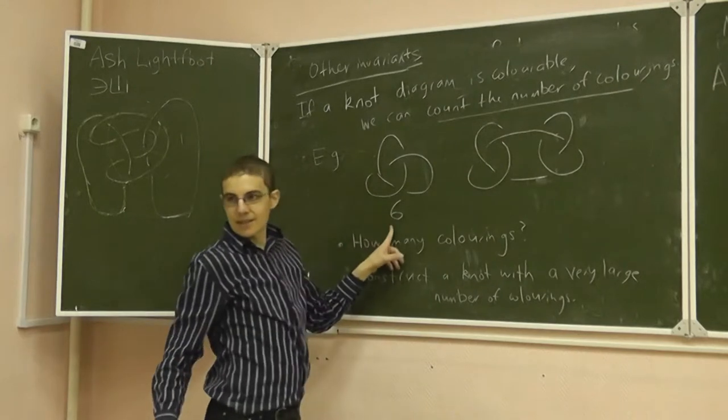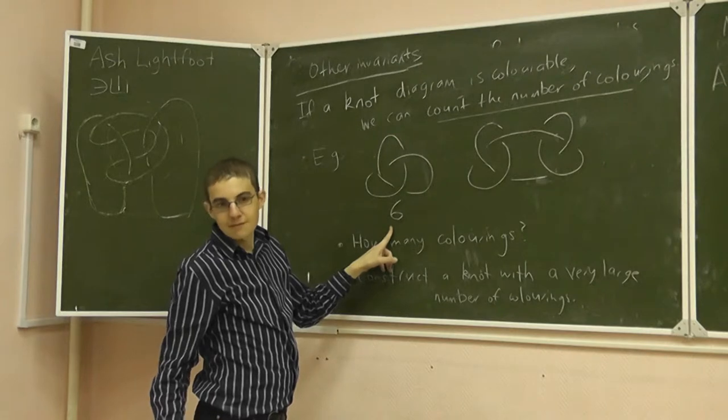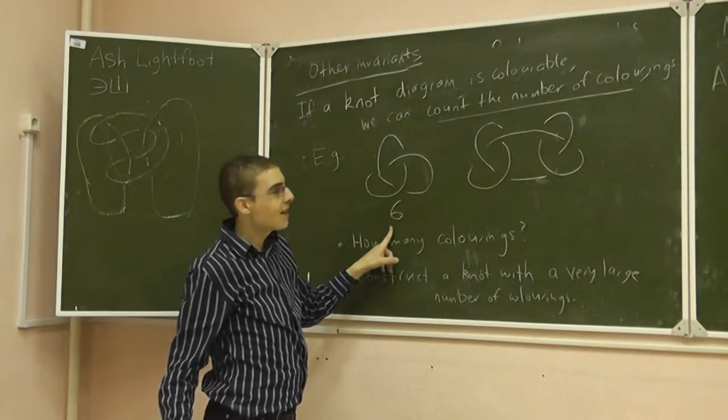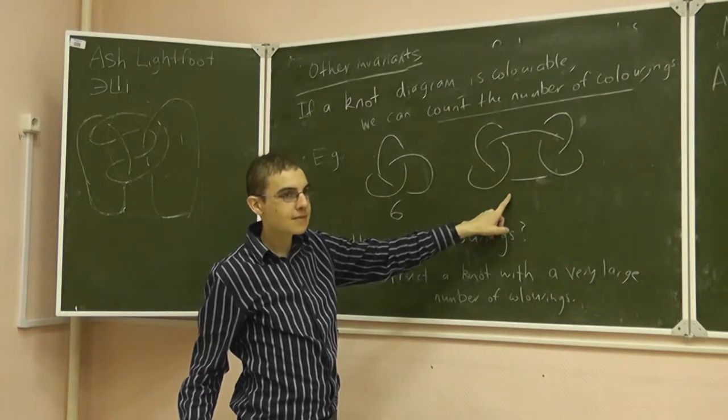So does anyone understand what I mean by six colorings? It's one, two, three, or one, three, two, and so on. Okay, is this colorable? Yes. Yes. But there are much more variants.